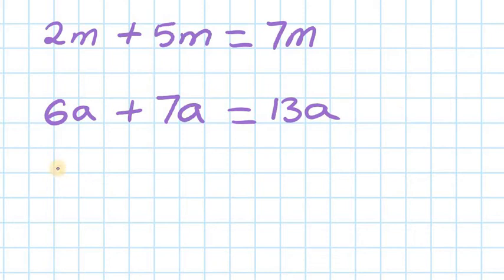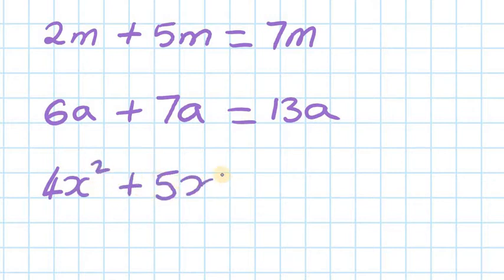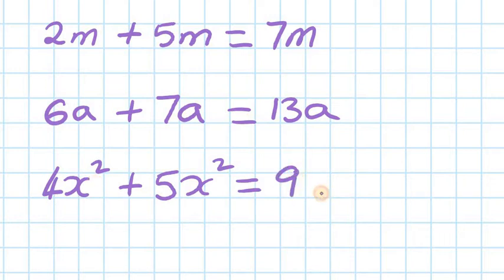Next one: 4x squared add 5x squared. They're both x squared, so they are like terms. So you've got 4x squared plus another 5x squared — all together is 9x squared.